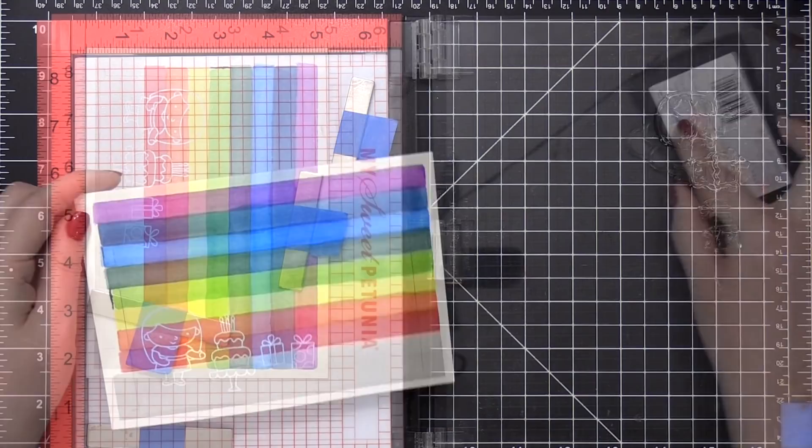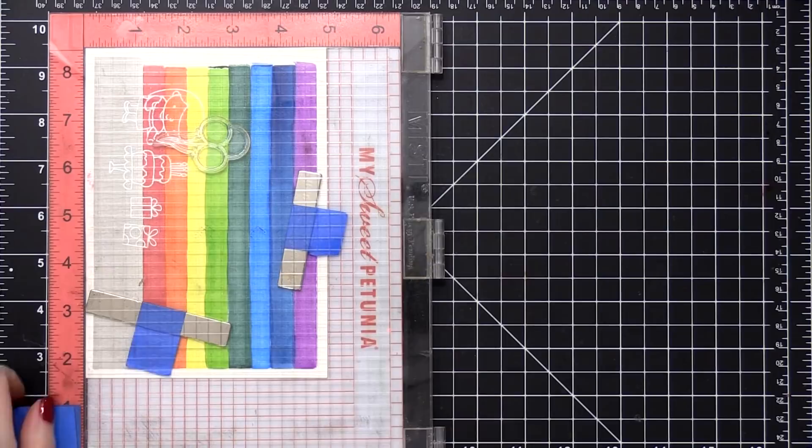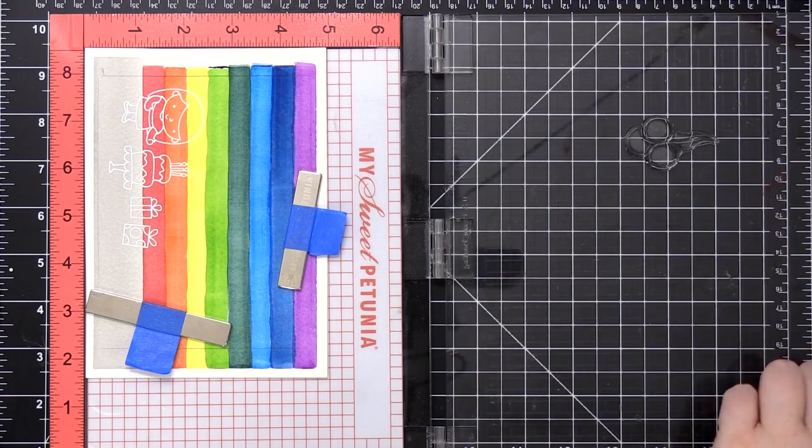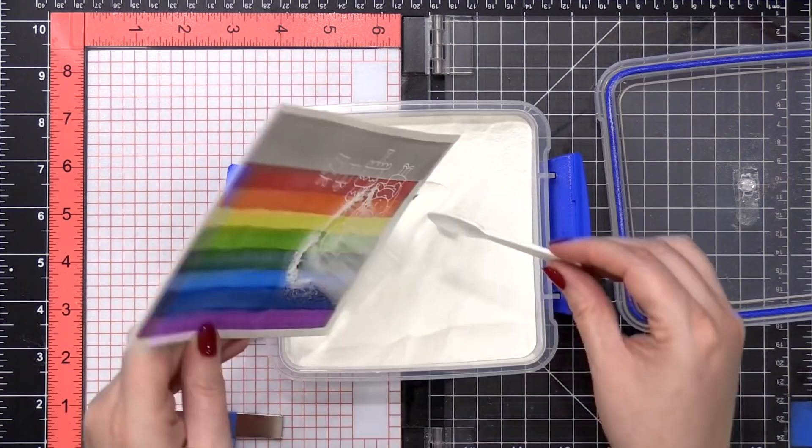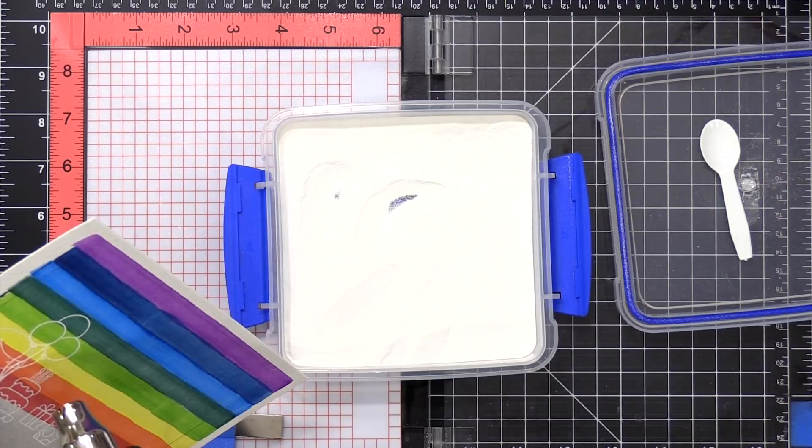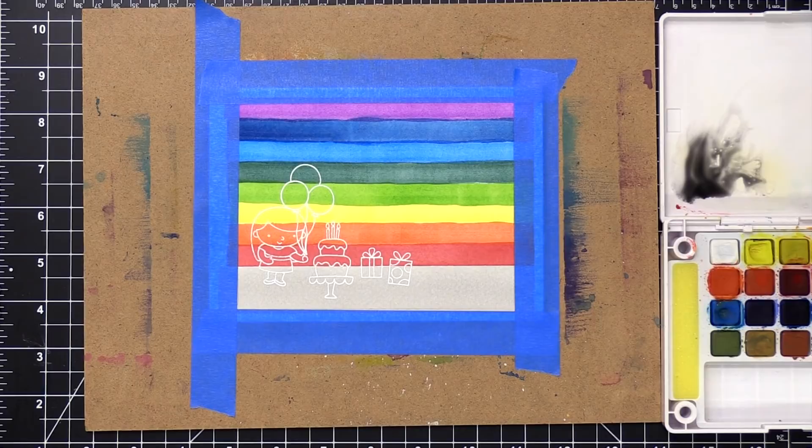When you're heat embossing on watercolor paper, you have to be really careful. You don't want to heat it too much, because it can melt too much and soak into the watercolor paper. So as soon as you see that that powder is melted, go ahead and move your heat tool away. I added the balloon image, because I wanted the little girl holding up those balloons, and then I'll do the same steps by adding that white embossing powder and heating it until it was melted.